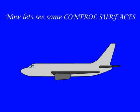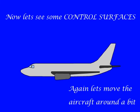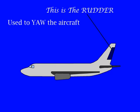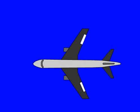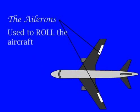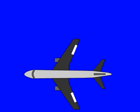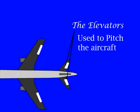Now let's see some control surfaces again by moving the aircraft around a bit. This is the rudder, which is used to yaw the aircraft. Now if we see from the top, we see the ailerons on the wing, which are used to roll the aircraft. And on the horizontal stabilizers, we have the elevators, used to pitch the aircraft.